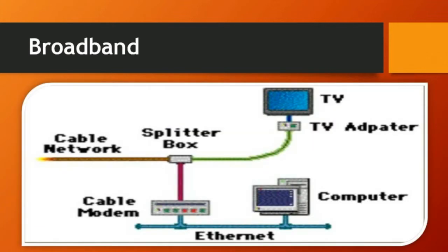The next one is broadband. With a cable connection — like the cable connection we use at home — this is called broadband. The user must subscribe to cable television or an internet service. They can also stay connected to the internet at all times, though the connection may be low during rainy months.